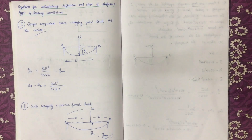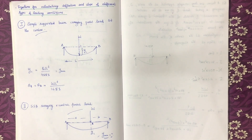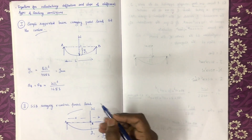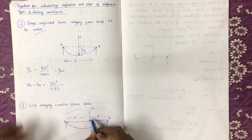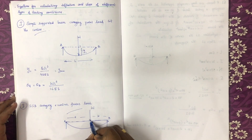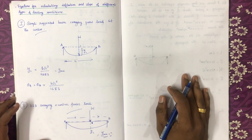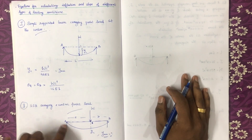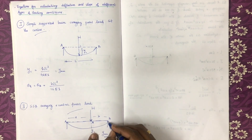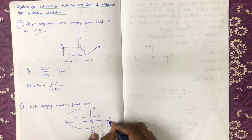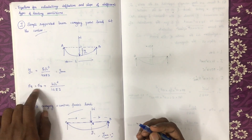How are you doing? This is a simply supported beam. This is an eccentric loading, and this is a central loading. On the left-hand side, there is a deflection. The first quantities are theta A and theta B.